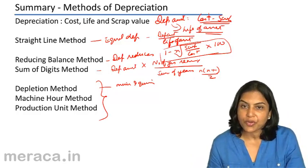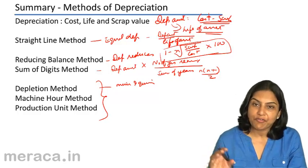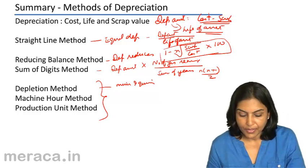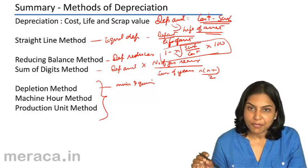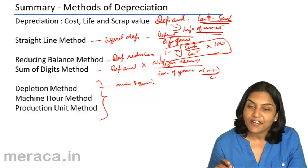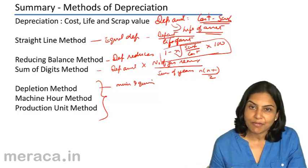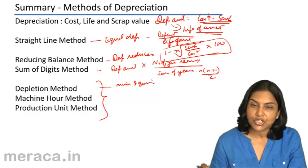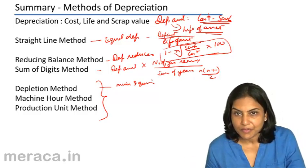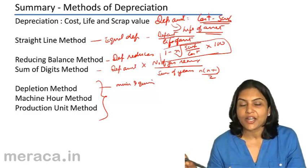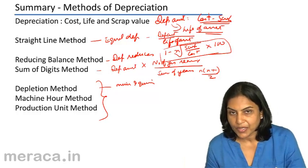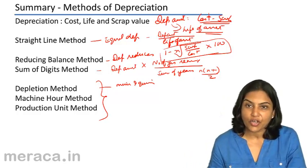Under the machine hour method, the life of the machine is estimated as the total number of machine hours. The machine hour rate of depreciation is determined by taking the total depreciable amount divided by the total estimated machine hours. Depending on the number of hours worked, this rate is applied to arrive at depreciation for each year — so depreciation varies depending on usage.